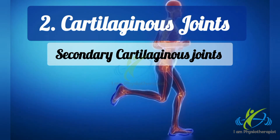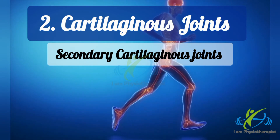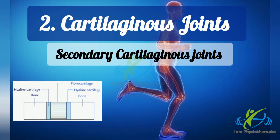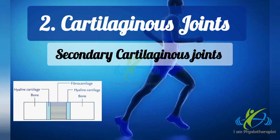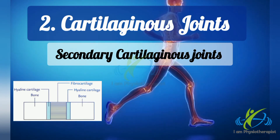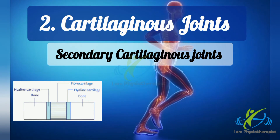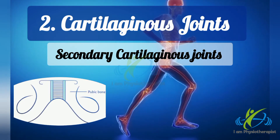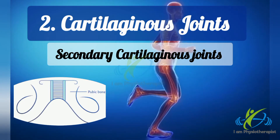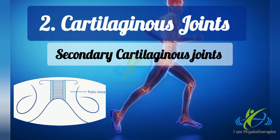Secondary cartilaginous joints are covered by a thin layer of hyaline cartilage and united by a disc of fibrocartilage. These joints are permanent and persist throughout life. Examples include symphysis pubis, intervertebral disc, and manubriosternal joints.